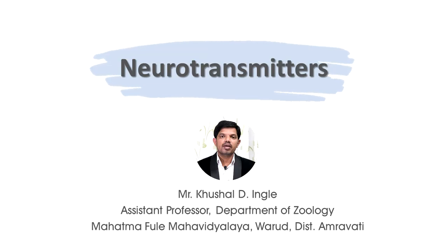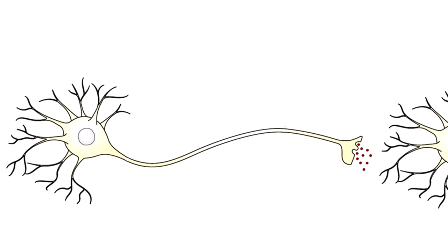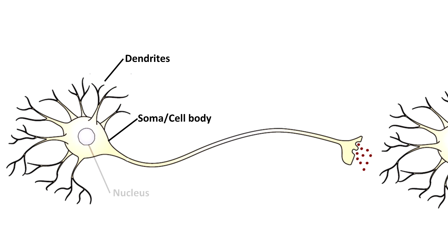Hello everyone, my name is Kushal Ingade and today we will discuss about neurotransmitters. First of all, we should know some basic parts of the neuron. Here we will revise within a few minutes what is meant by the neuron and which parts it has. This one is the dendrite, this one is the soma or cell body, this one is the nucleus, this is the axon.